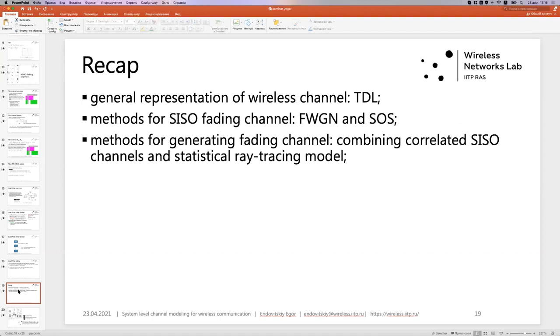Let us recap. There was, firstly, a general representation of TX channel. TX channel tap delay line and methods to obtain such tap delay line. Firstly, for a case of single input-single output fading channel. Those are filtered white Gaussian noise and some modifications of sum of sinusoids. Then methods for generating MIMO fading channel. The first one was to combine correlated SISO channels. And the second one is statistical ray tracing models. So that concludes my presentation. Thank you for listening.